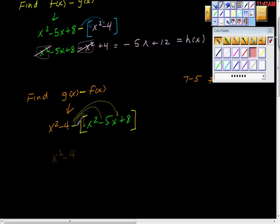So I'm just going to rewrite the first part here and say that we have x squared minus 4. Negative times a positive is negative x squared. Negative times a negative is positive 5x. And the negative times a positive is negative 8.